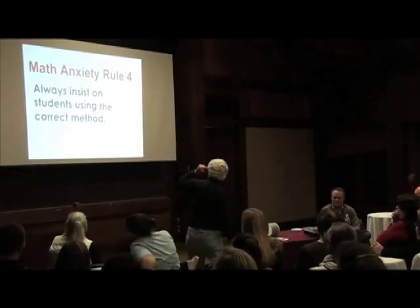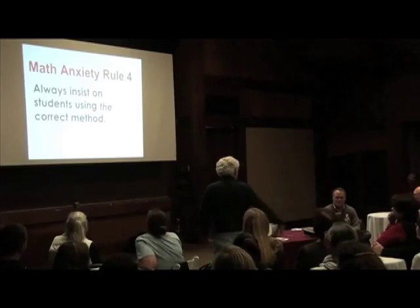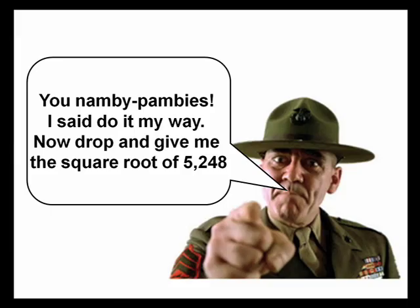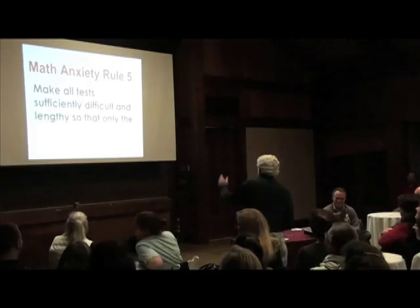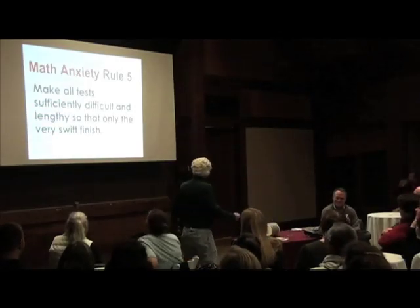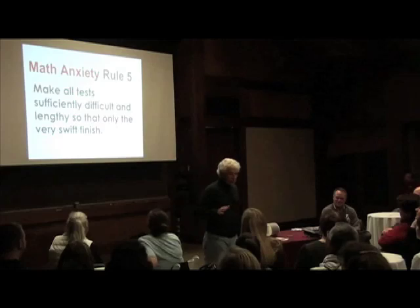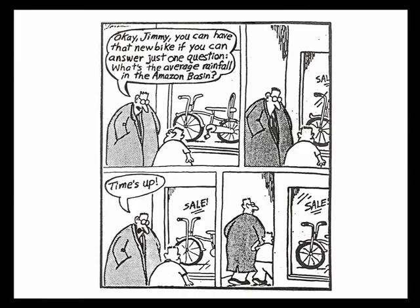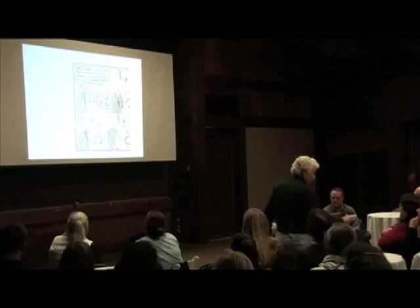Math anxiety rule number four: always insist on students using the correct answer. Heaven forbid. Math anxiety rule number five: make all tests sufficiently difficult and lengthy, so that only the very swift can finish. 'Okay Jimmy, if you can answer just one question — what's the average rainfall in the Amazon basin? Time's up.'